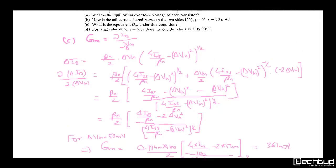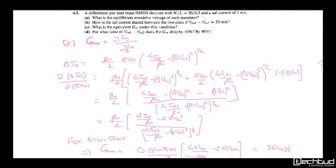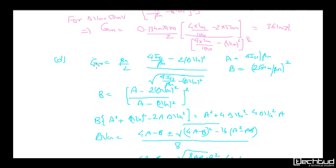Now the fourth part of the question: For what value of VIN1 - VIN2 does gm drop by 10% and by 90%? Two values need to be found. The gm we got for 50mV is 3.61 mA/V. We have the equation: gm = (β/2)[4*ISS/β - 2*δVin²]/sqrt(4*ISS/β - δVin²).